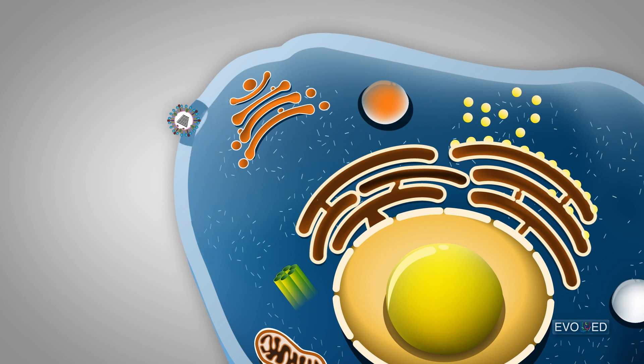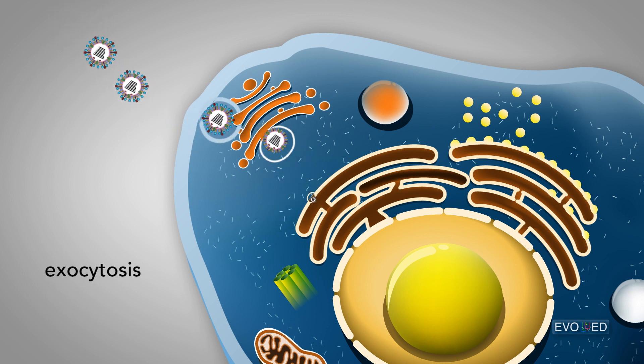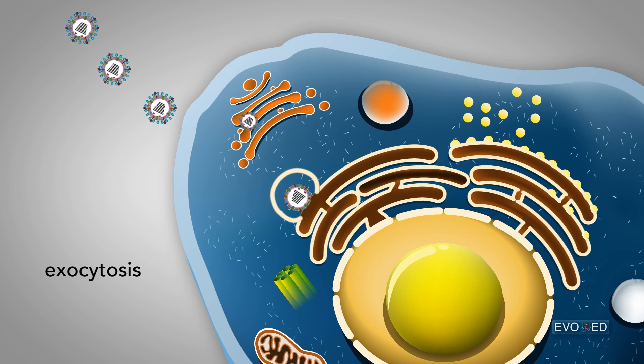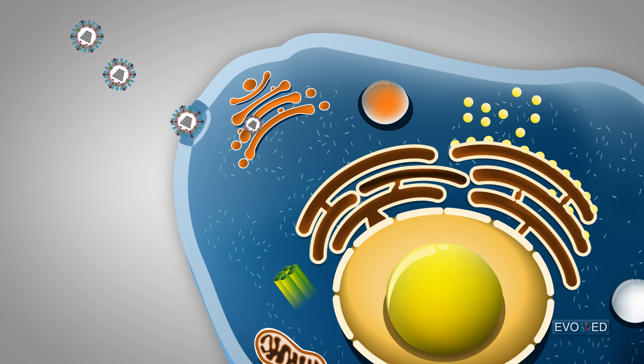which allows the viral particle contents to be released into the surrounding intercellular space where those particles can then go on to infect surrounding uninfected cells. This particular mechanism of shedding is called exocytosis, and it works great for viruses that are not bound by an outer membrane envelope.